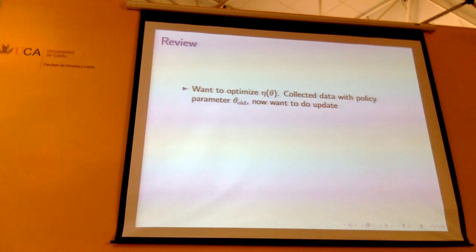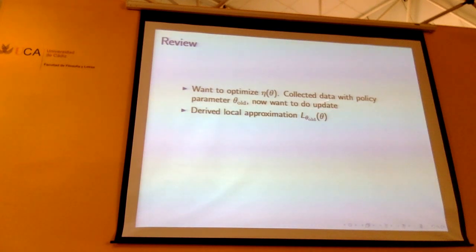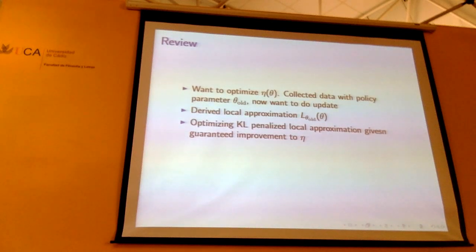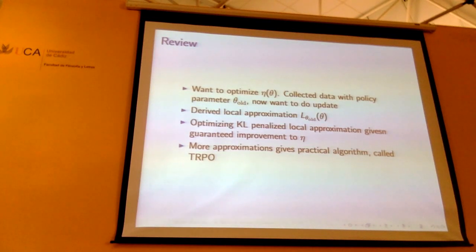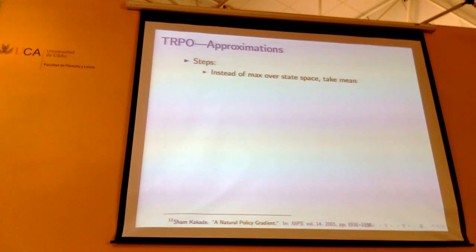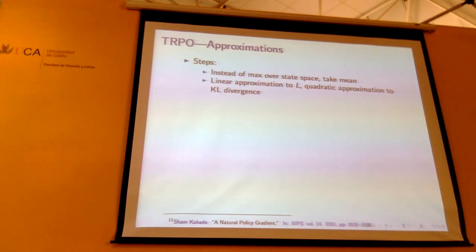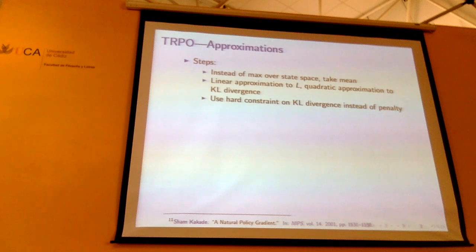Reviewing what we've done: we want to optimize policy performance, collected data with our old policy, and derived a local approximation good right around the old policy. If we optimize this local approximation minus the KL divergence penalty, we're guaranteed to get an improvement to our actual performance. The algorithm from the previous slide is still a bit impractical because it involves a max over state space. We can derive a practical algorithm by taking a mean instead of a max, making a linear approximation to the objective, and a quadratic approximation to the KL divergence to compute a step.